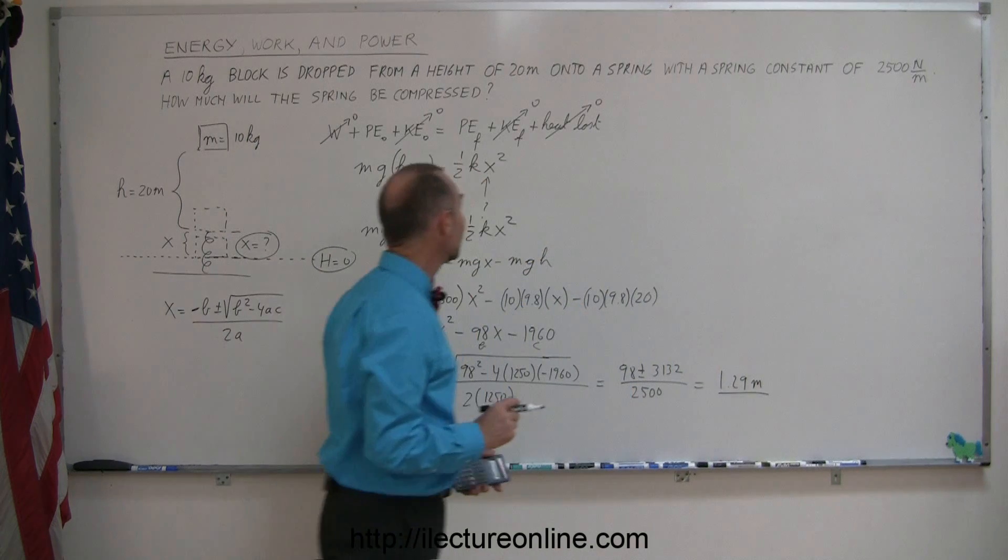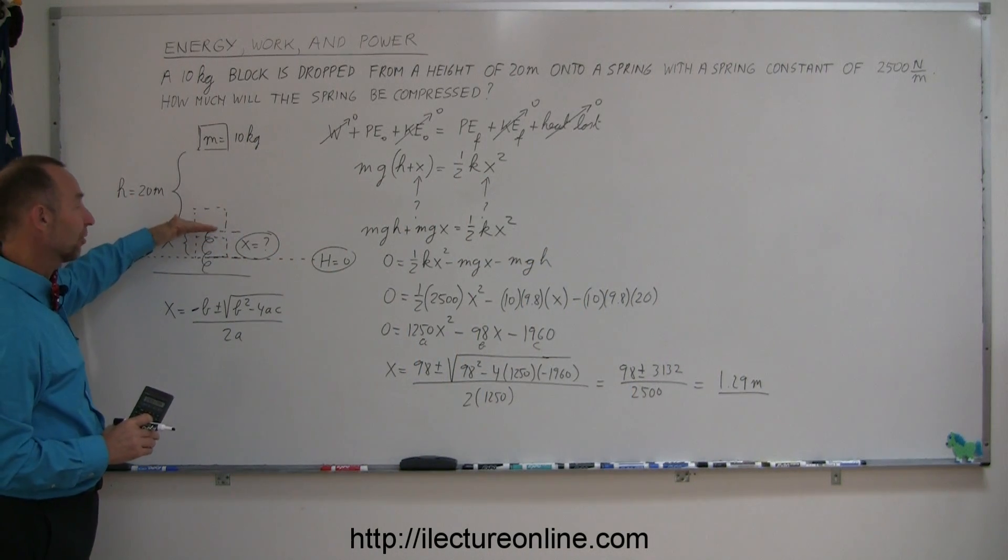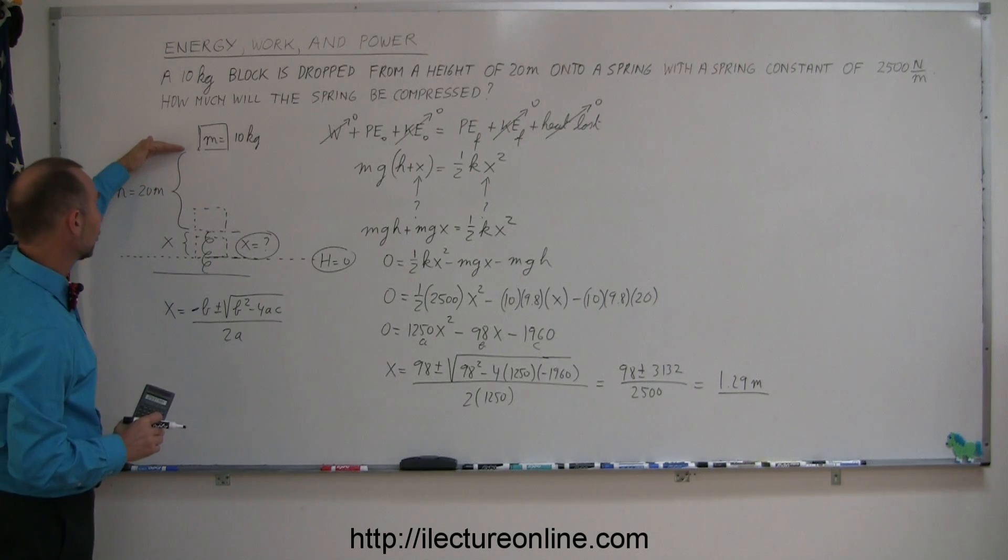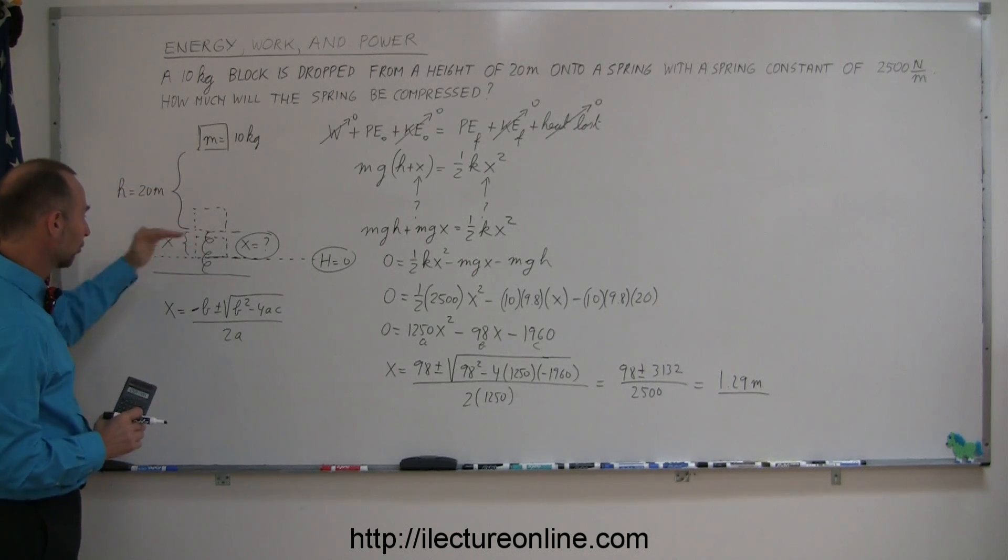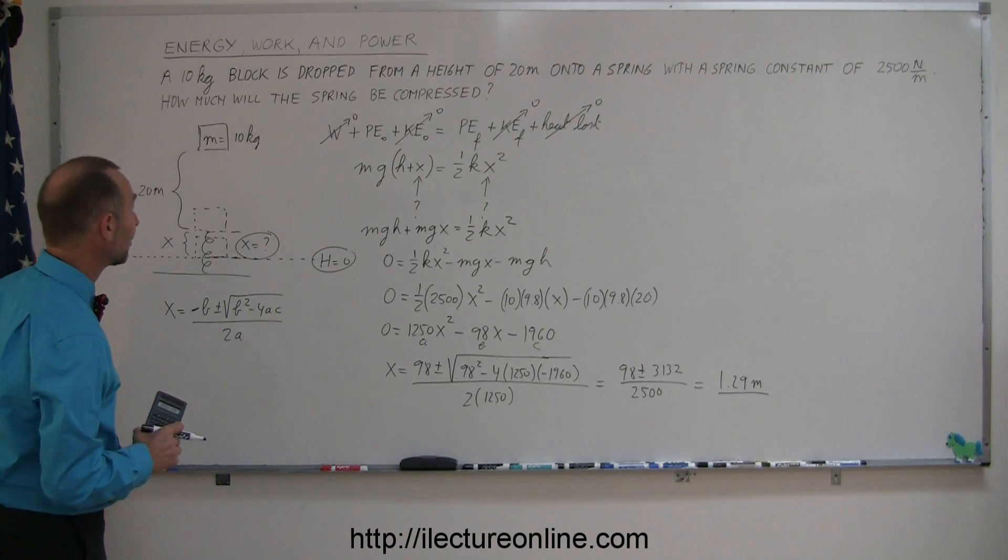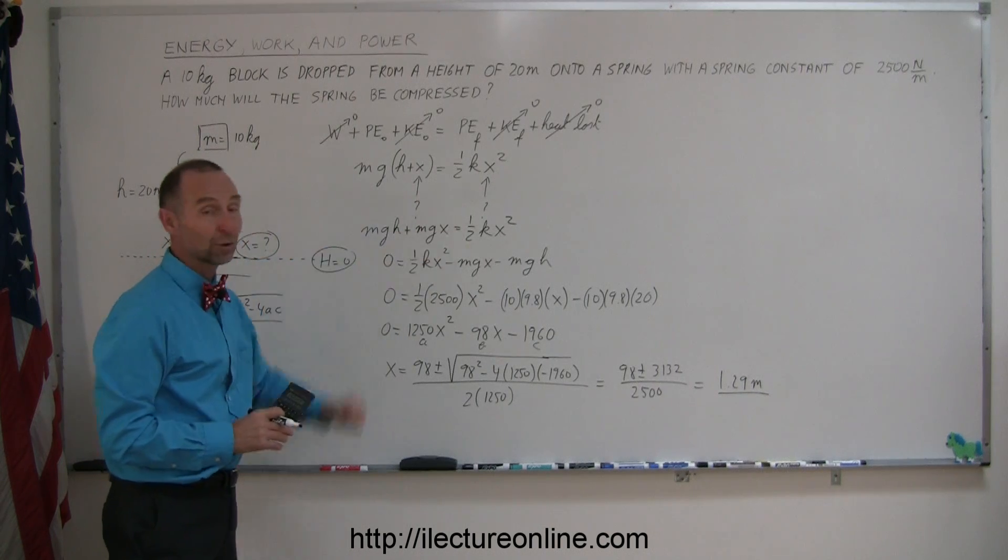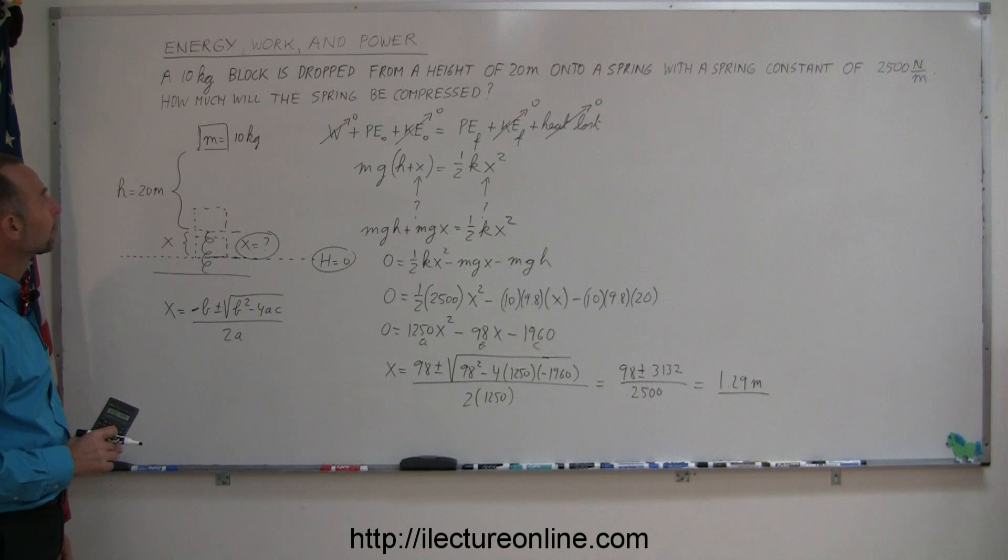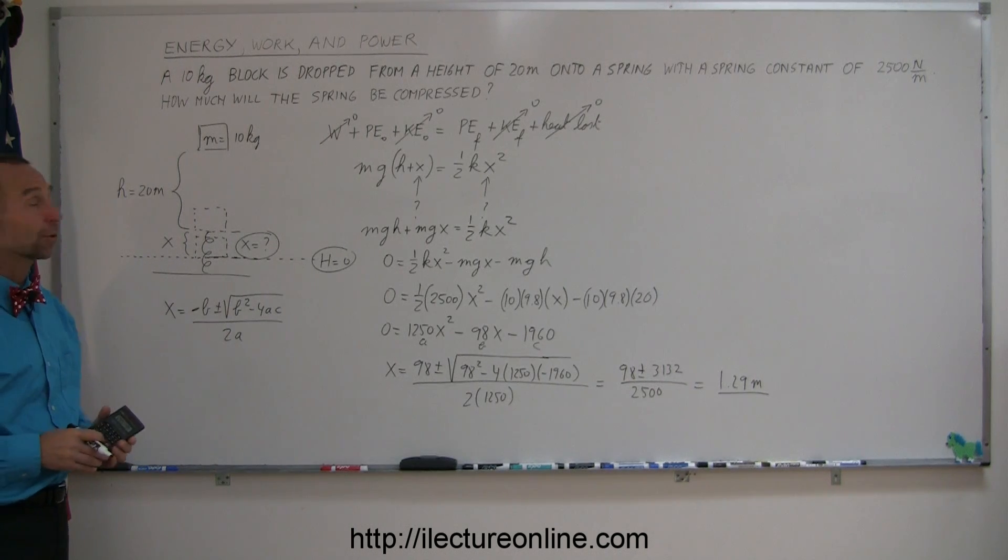So, this gives us the amount the spring was compressed from rest after the block hits the spring. And so, we can say, then, that the total distance the block drops is the 20 meters plus the 1.29 meters before the spring comes to rest. And that's the answer to this problem. So, it looked like a simple, easy problem, but it turns out we end up with something that we have to recognize is a quadratic equation, and then we need to use the quadratic formula to solve that equation. All right, there's a good example. Let me try to come up with some other good ones.